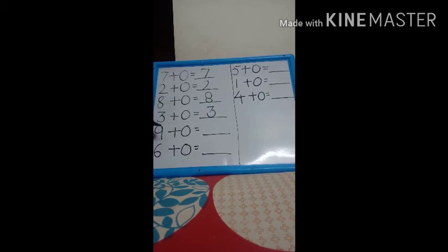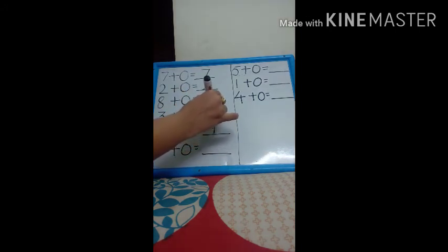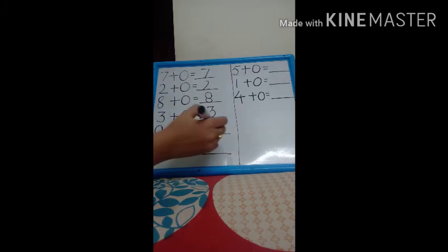Now, next. Nine plus zero. Nine. Because zero means nothing. Zero के पास तो कुछ भी नहीं नहीं add करने के लिए। तो जो दूसरा नंबर होगा, वो क्या होगा? Answer. Next. Six plus zero. Six.